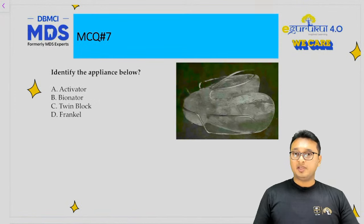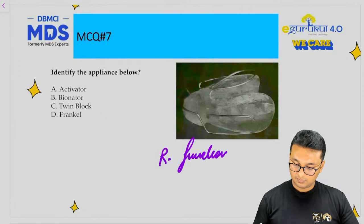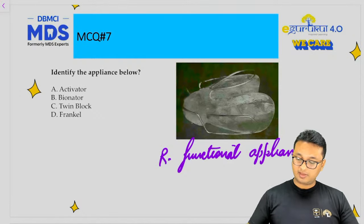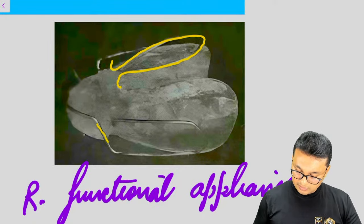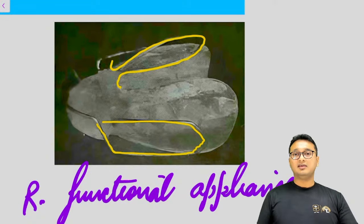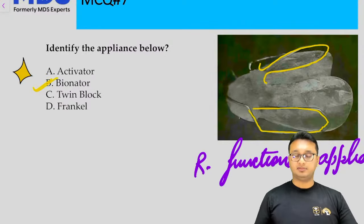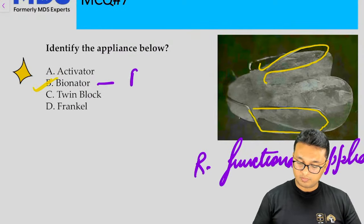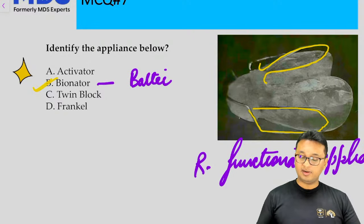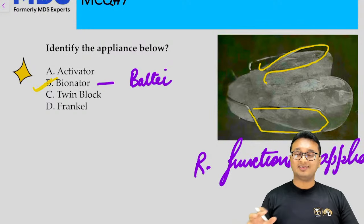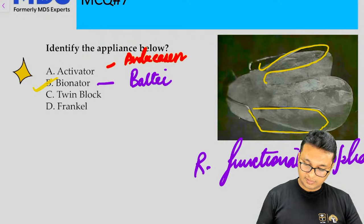The next image-based question asked you to identify a removable functional appliance. Looking closely, you can observe the presence of a palatal omega-shaped loop arch wire along with vestibular wires. This architecture is characteristic of the Bionator appliance, first advocated by Balter for myofunctional orthodontics. The activator — also known as a monoblock — has no wire components except a labial bow and is quite bulky; it was given by Andreessen.